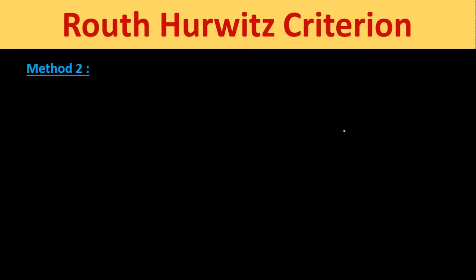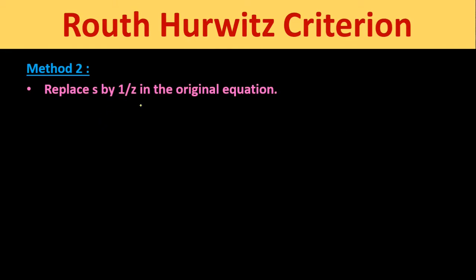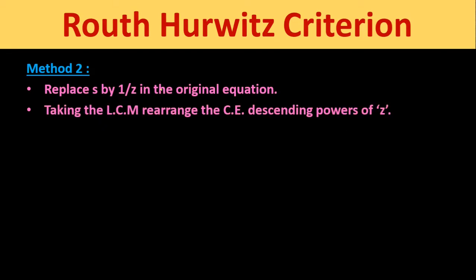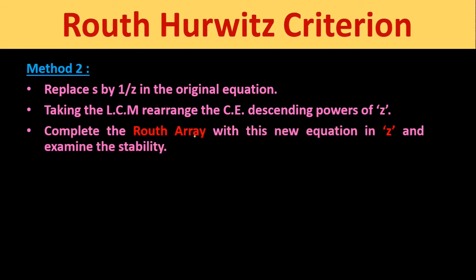Now we discuss Method 2. In this method, we substitute s = 1/z in the original equation, take the LCM to find the characteristic equation in z, rearrange it in descending powers of z, and then construct the Routh array using this z equation to examine stability.